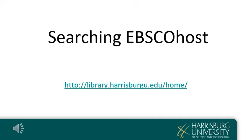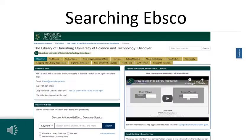Let's take a closer look at using the EBSCO Discovery Search to do some literature review research. From the library homepage, we can use the Discover Articles Quick Search box to type in a topic and begin searching, or use the Advanced Search link.